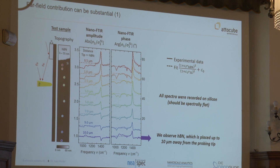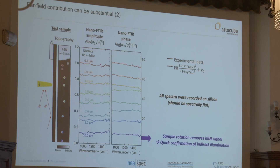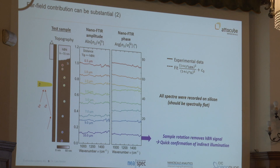It's not what you want at all. One way to avoid this problem and also show that it's an illumination effect is to just rotate the sample so that we illuminate from the other side. Now we can see that the peak that was there before is gone. This is clear because there's no HBN here. This is also a quick test for your experiments: if you think there's an illumination effect, just rotate the sample by 90 or 180 degrees. Does anything change? If yes, then probably it's a far-field effect.